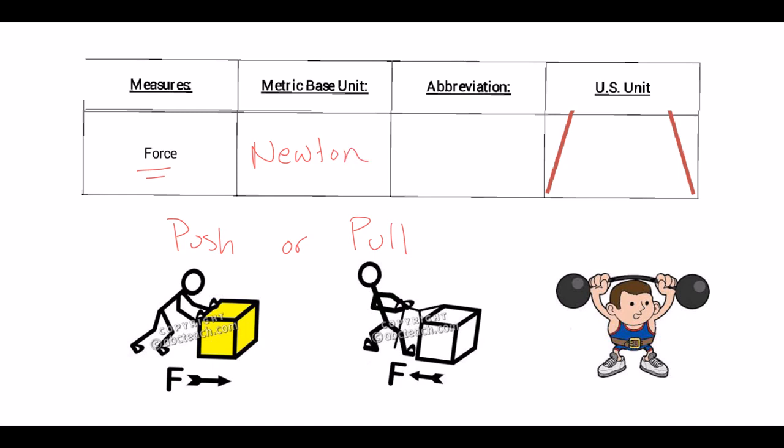It's abbreviated as a capital N, or as a kilogram times meter per second squared. There is no US unit for Newtons because it is universal throughout the entire world.